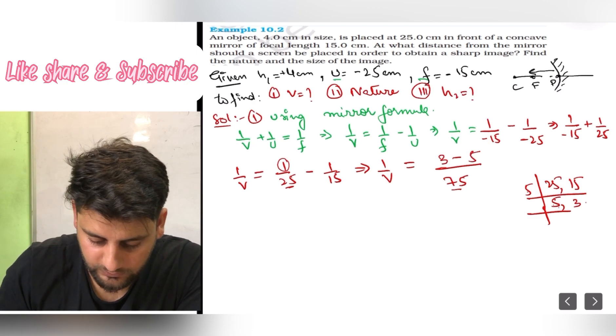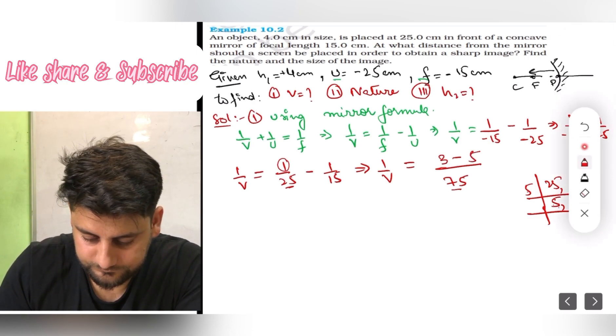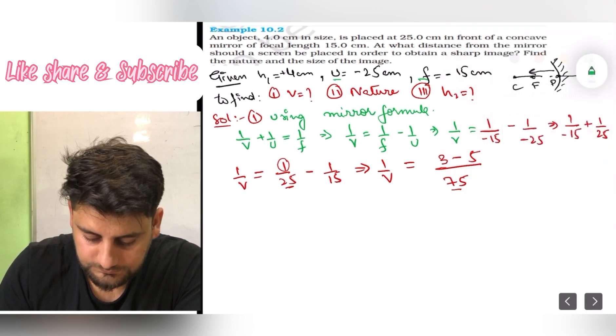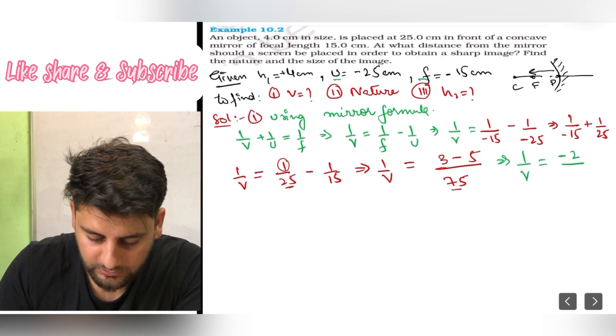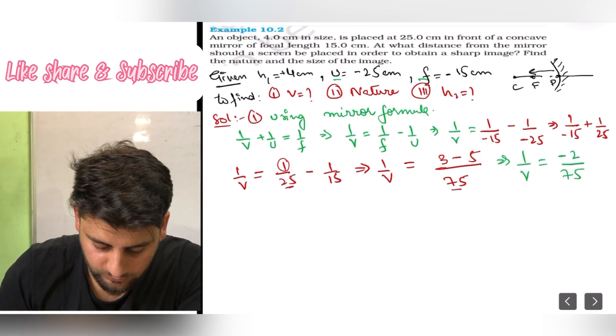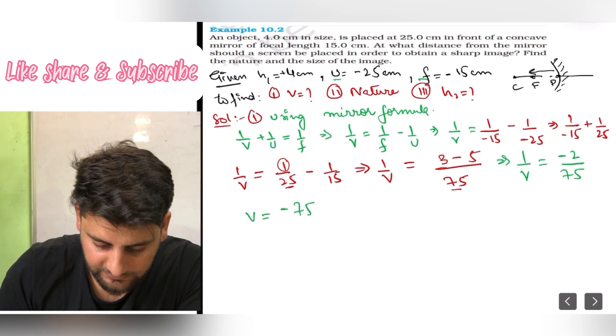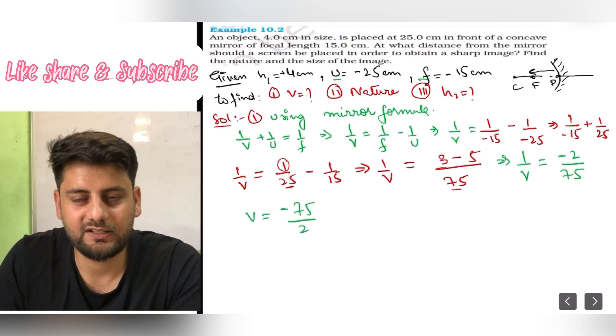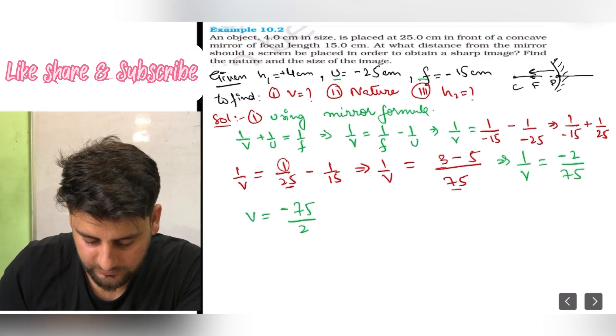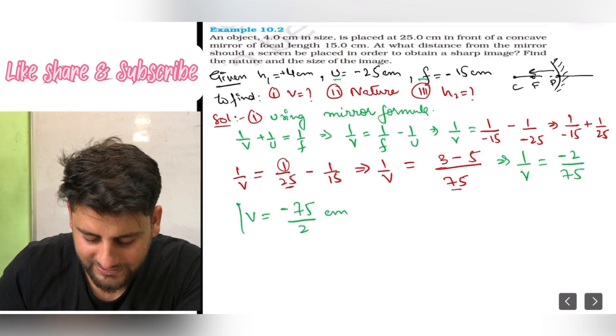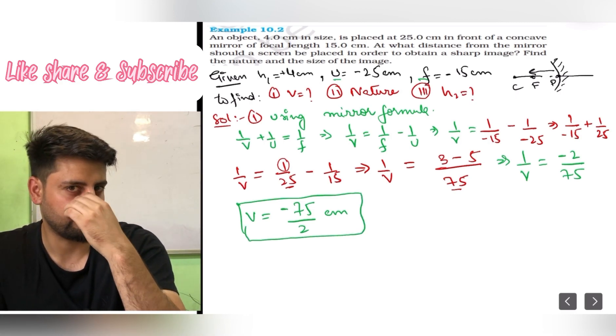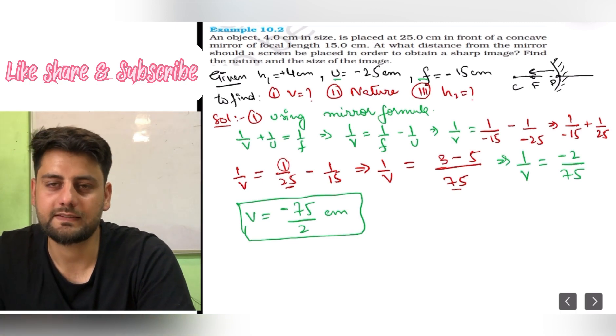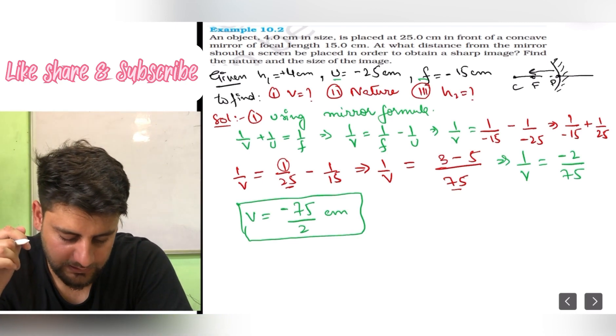What do we multiply to 25 to get 75? That is 3. So 3 into numerator is 3 ones are 3 minus. 15 ko kya multiply karen to 75 milega? 15 into 5 is 75. So 5 ones are 5. So what you are getting is 1 upon v equals minus 2 upon 75. So v can be written as minus 75 upon 2, 75 by 2 centimeters. If you want you can write it in decimals, but I usually like to keep it in fractions. It is 32.5 or something like that.